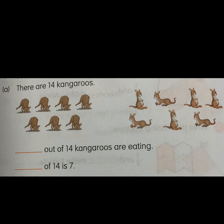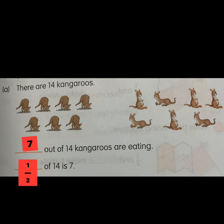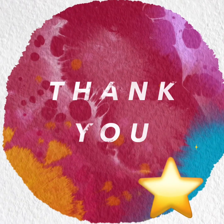Let's have a look at the answer for the last sum. There are 14 kangaroos — how many out of 14 kangaroos are eating? There are two groups of kangaroos: one group is eating and another group is not eating. Each group has seven kangaroos, so seven out of 14 kangaroos are eating. In other words, this is half of 14 — half of 14 is seven.